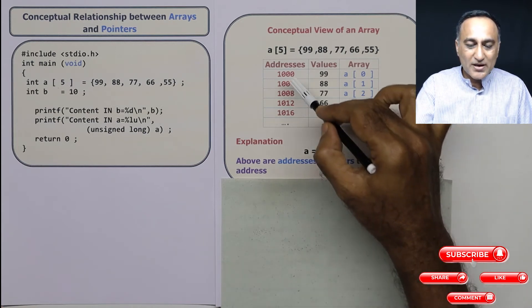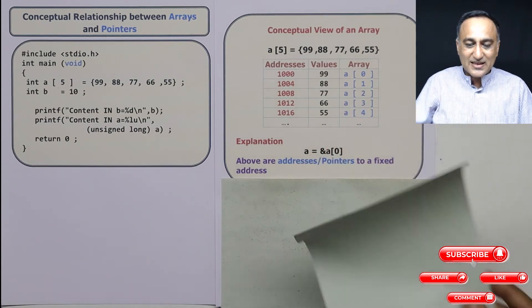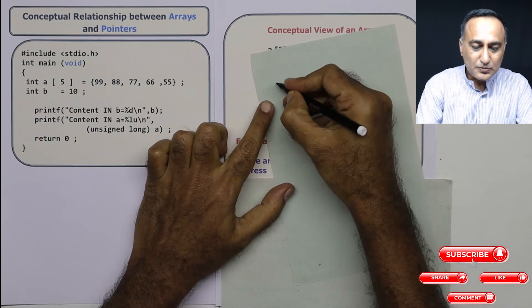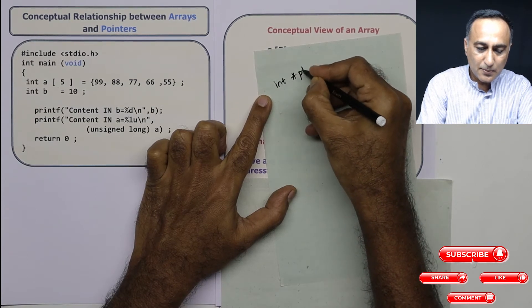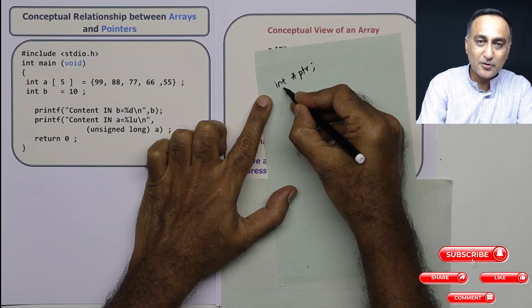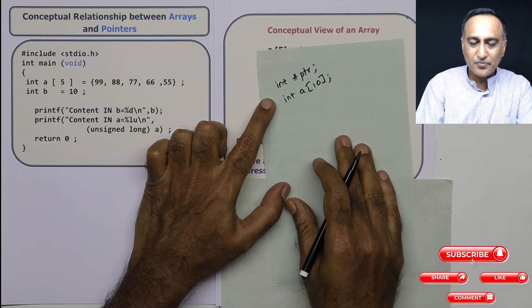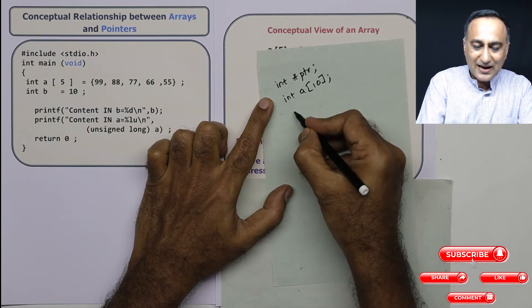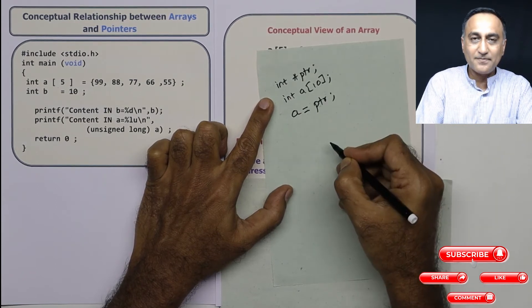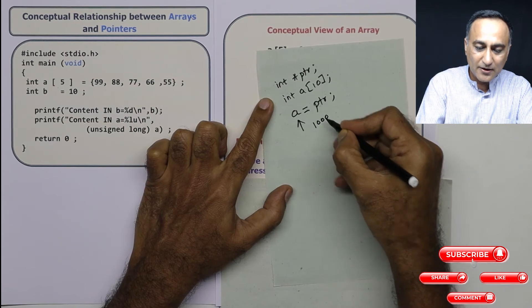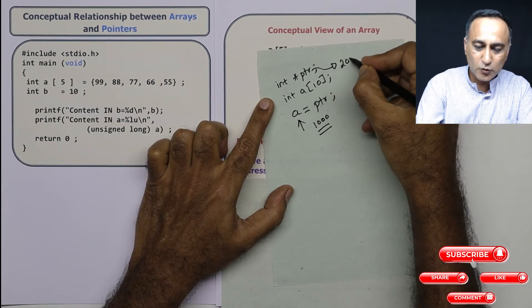The array A will always refer to address 1000. I can't take something like this. Let us say, I have a declaration like this. I have int star pointer, that is a pointer to an integer type of data. And I have int A is equal to N. Now, I can't take A and assign it the pointer because A is always going to reflect the address of the 1000th location.